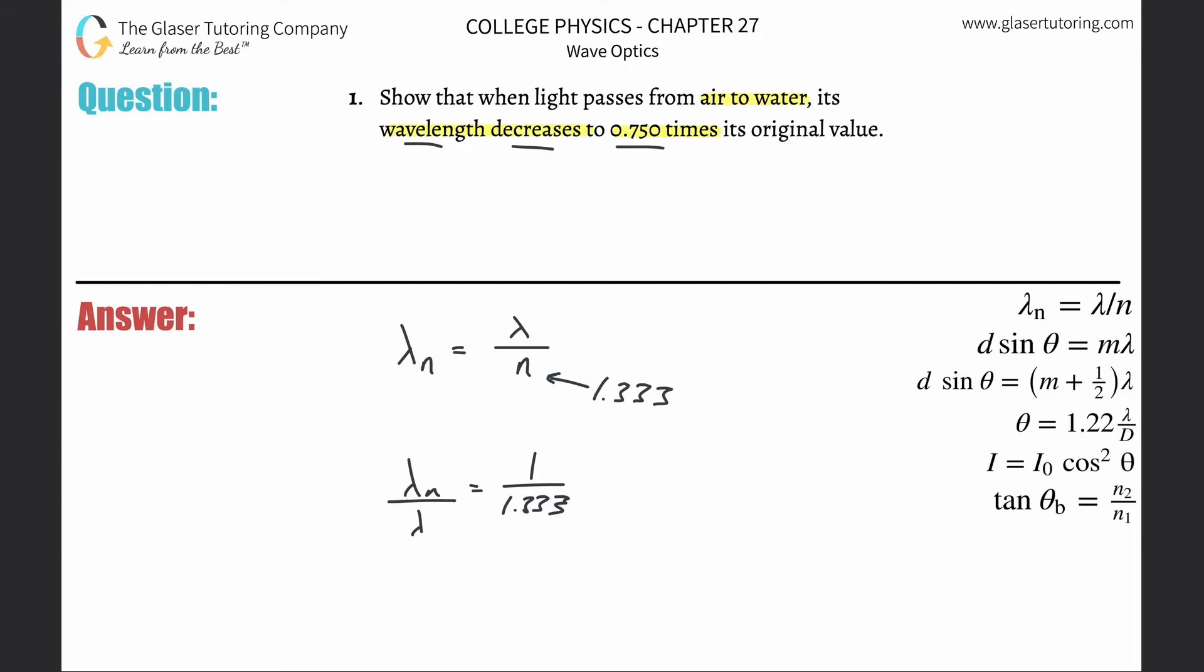So if you plug that ratio into the calculator, 1 divided by 1.333, what do you get? You get the fraction of 0.75.